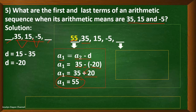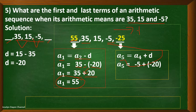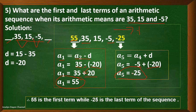To get the last term, we add the common difference to the fourth term, which is negative 5. So negative 5 plus negative 20 equals negative 25. For the detailed solution: the fifth term equals the fourth term plus the common difference, so negative 5 plus negative 20 equals negative 25. Therefore, 55 is the first term and negative 25 is the last term of the given sequence.